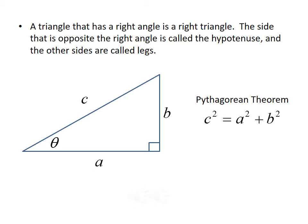Recall from geometry the Pythagorean Theorem, which says that in a right triangle, the square of the hypotenuse is equal to the sum of the squares of the legs. So C squared equals A squared plus B squared. We'll use this theorem quite a bit in this section.